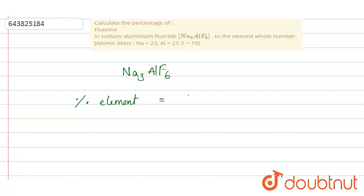We have a formula for this: weight of element by total weight of compound into 100. This is the formula for percentage of element.